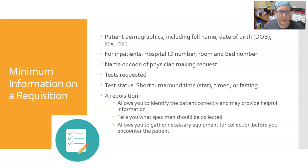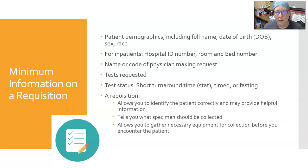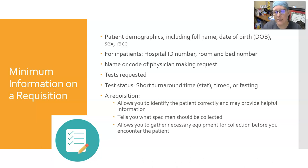First, let's talk about the test requisition. The minimum information that needs to be on the test requisition includes patient demographics — their full name, date of birth, sex, and race. For inpatients, they also need their hospital ID number, room and bed number, a name or code for the physician making the request, the tests requested, and the test status: is it a short turnaround time or STAT test, is it timed, fasting, or routine?